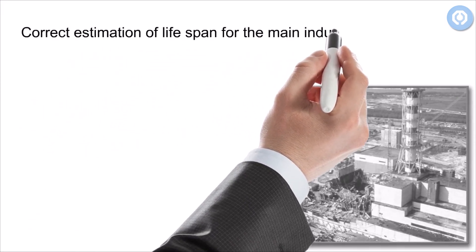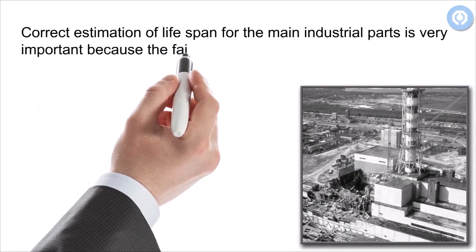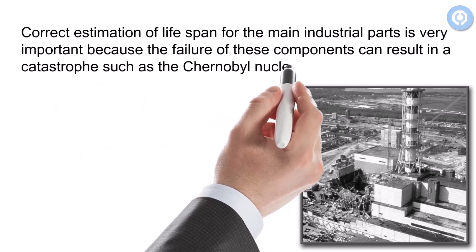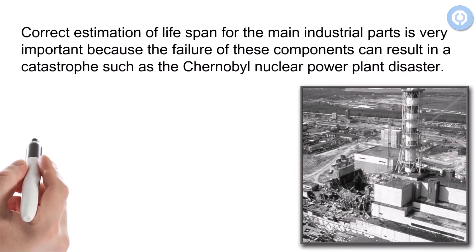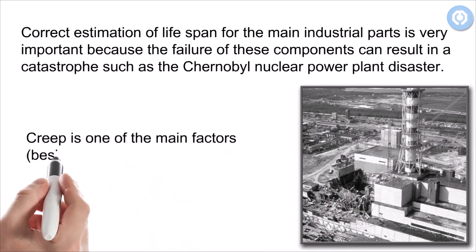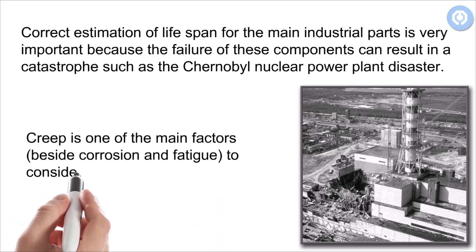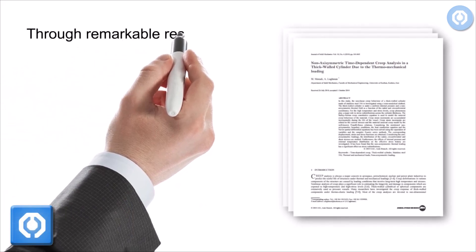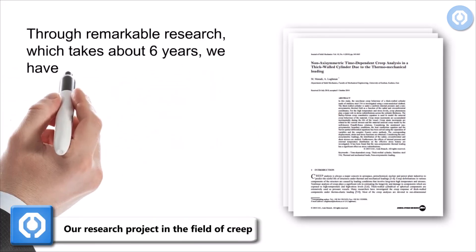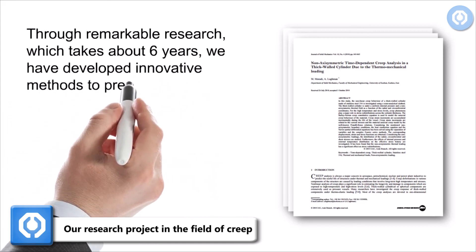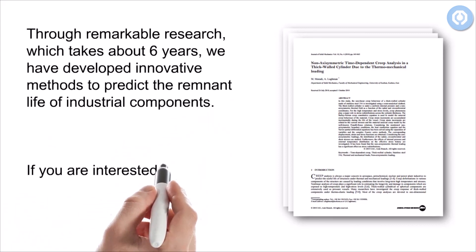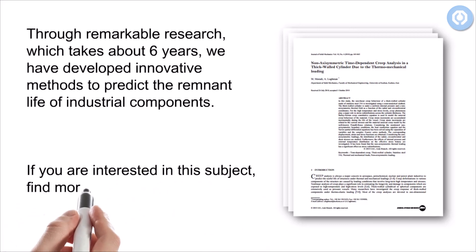Correct estimation of lifespan for main industrial parts is very important because the failure of these components can result in a catastrophe, such as the Chernobyl nuclear power plant disaster. Creep is one of the main factors, beside corrosion and fatigue, to consider for remnant life estimation of components. Through remarkable research taking about six years, we have developed innovative methods to predict the remnant life of industrial components. If you are interested in this subject, find more specific information through our published articles.